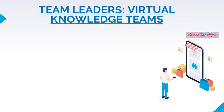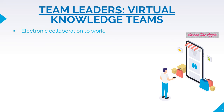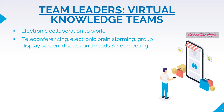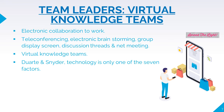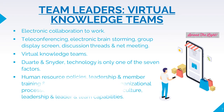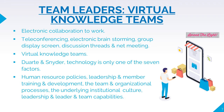The next important role of the team leader is to lead the virtual knowledge teams. Knowledge workers increasingly rely on electronic collaboration to work on core knowledge projects. Collaborators separated by time and distance may rely on teleconferencing, electronic brainstorming, group display screens, discussion threads, and net meetings. Virtual knowledge teams are formed when there are physical boundaries which must be overcome. Two well-known authors, Dwarthre and Sridhar, noted that technology is only one of the seven critical factors which make virtual teams effective. The other six factors include human resource policies, leadership and member training and development, the team and organization process, the underlying institutional culture, and leader and team member capabilities.